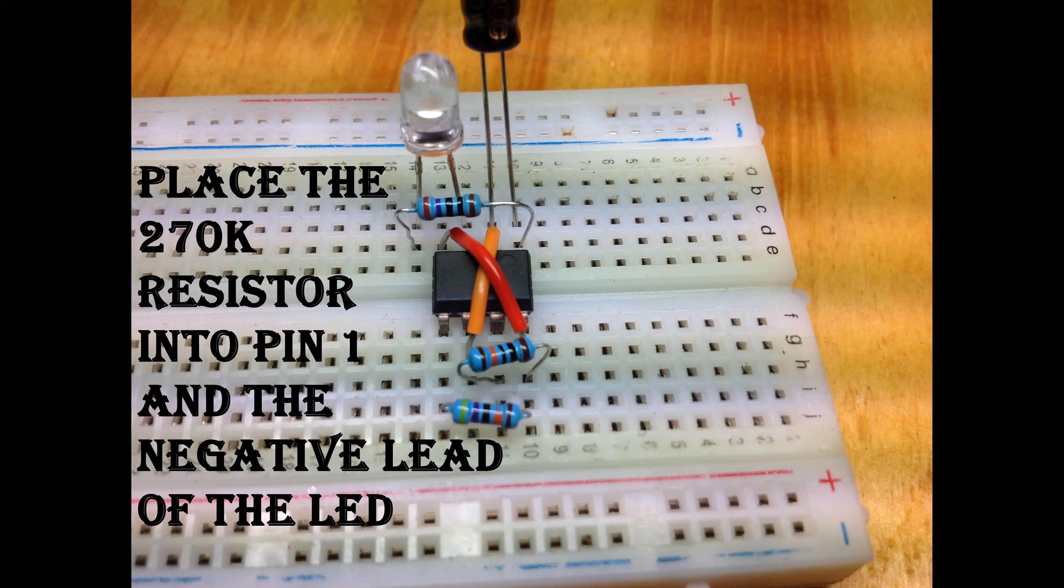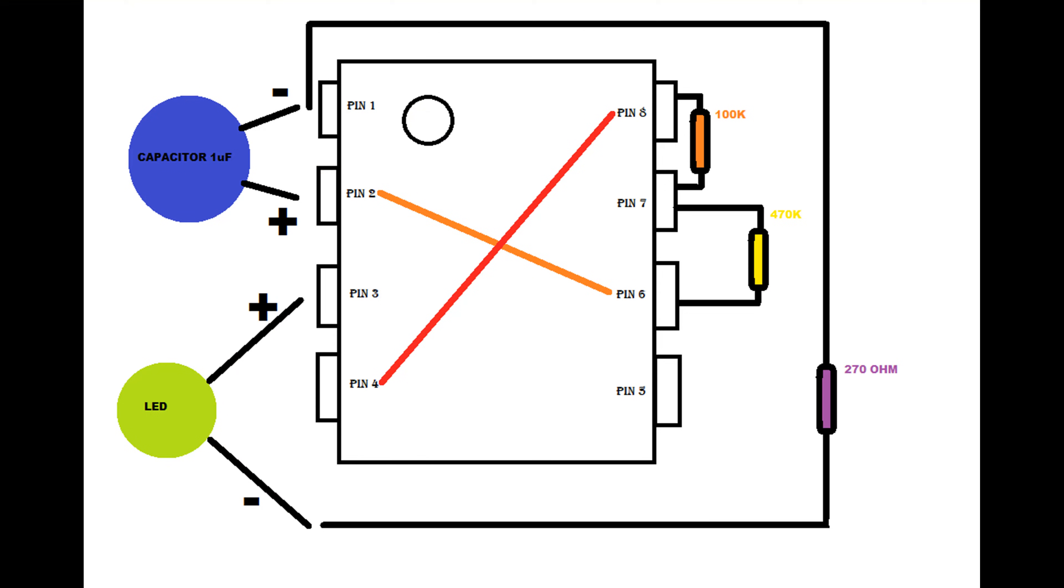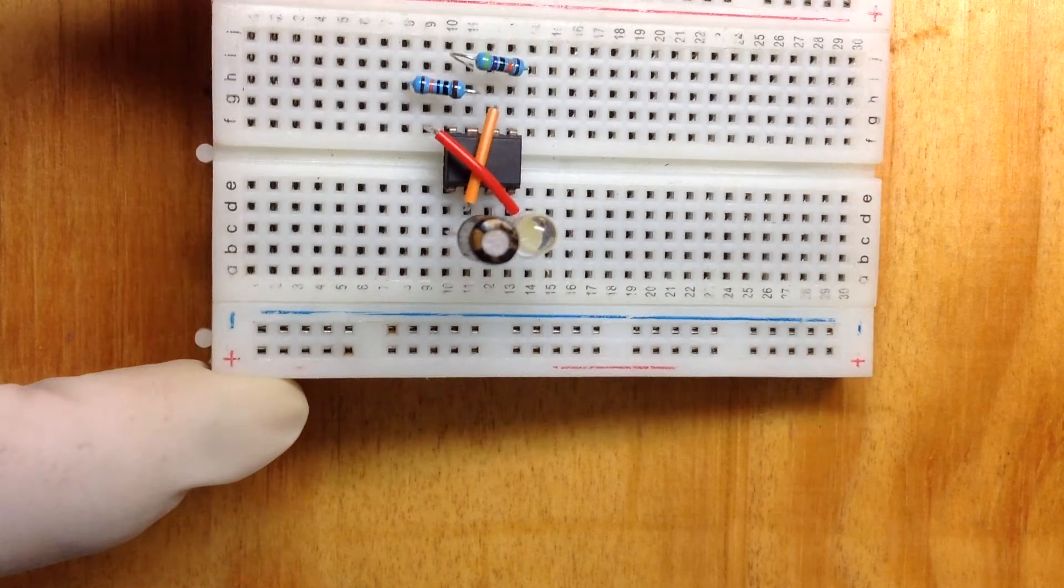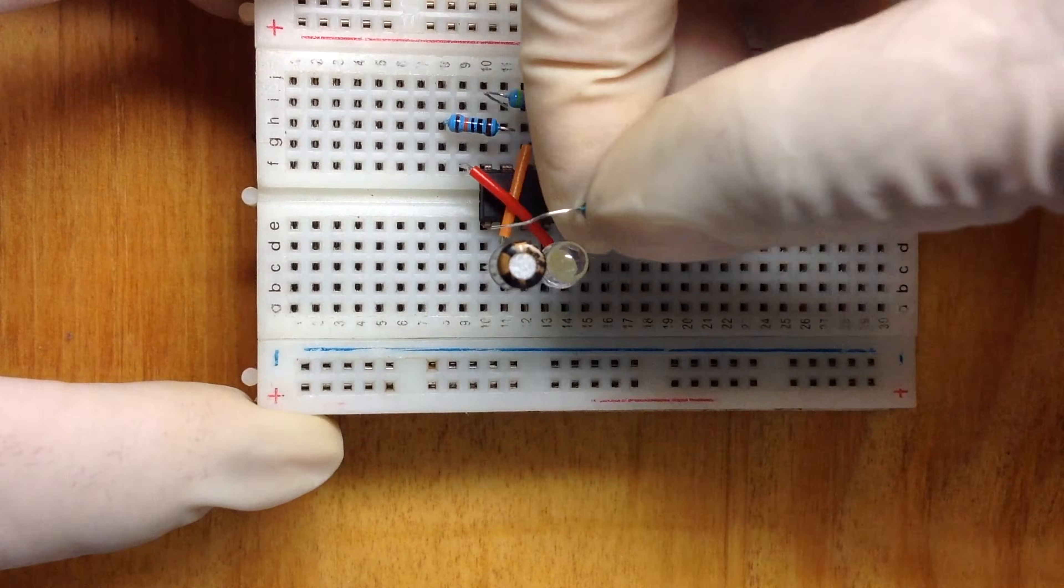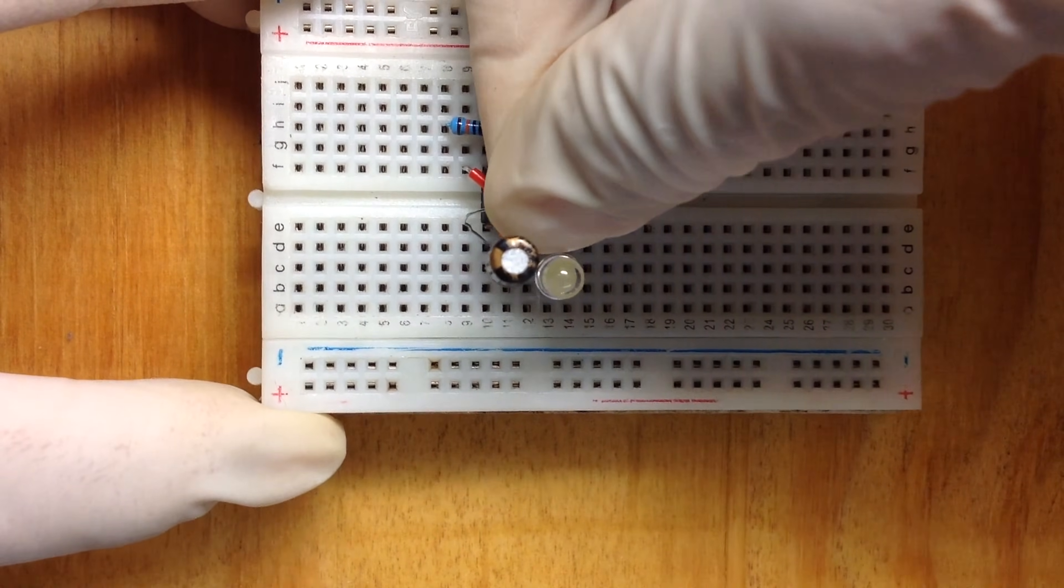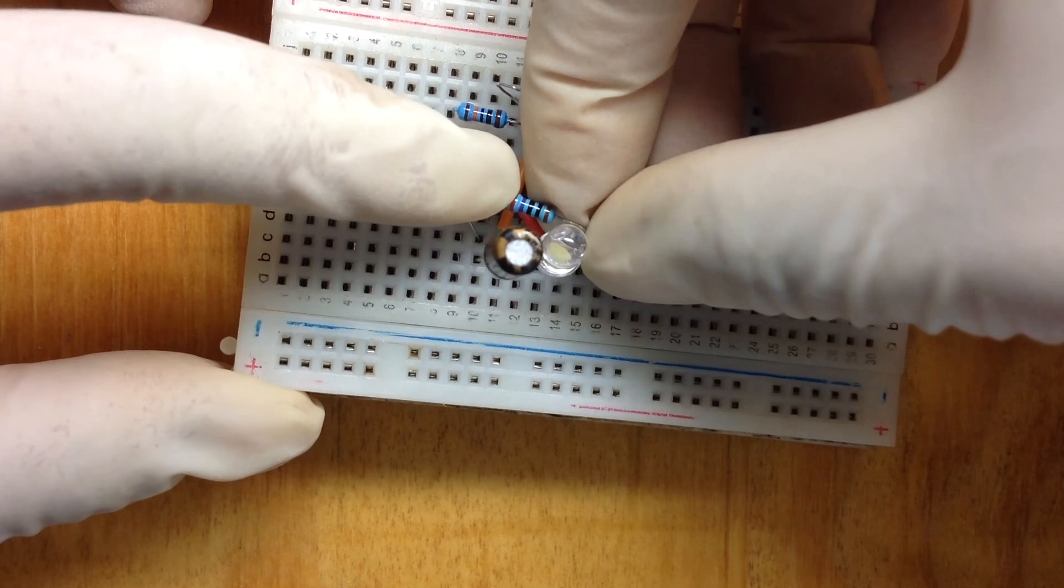Now take your 270 ohm resistor and connect it to pin 1 of the IC. Take the other end and connect it to the negative lead of the LED.